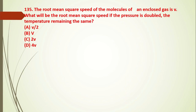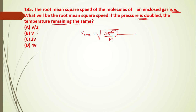Question 135: the root mean square speed of molecules of an enclosed gas is V. What will be the rms speed if the pressure is doubled and the temperature remains the same? The rms speed equals the square root of 3RT divided by M. Since temperature remains the same, the velocity remains the same. The answer is B.